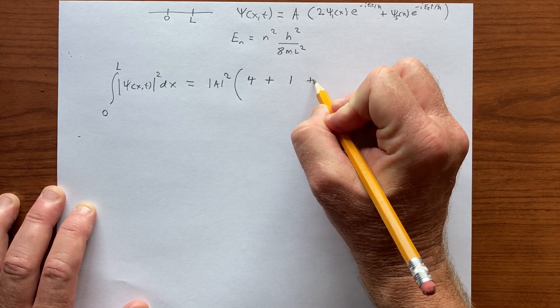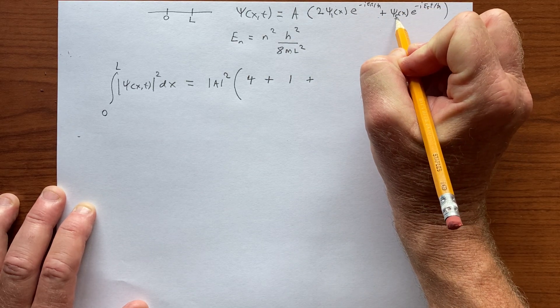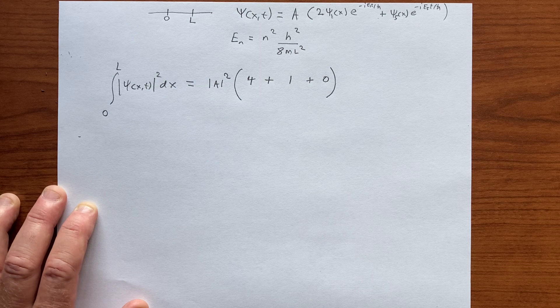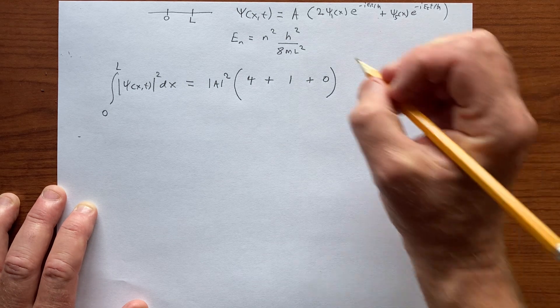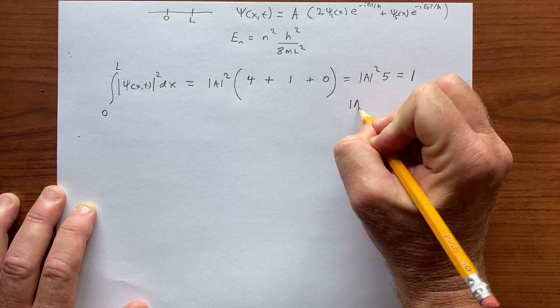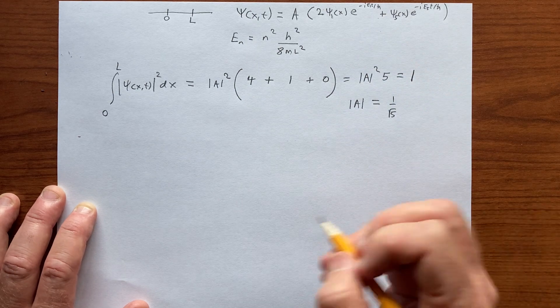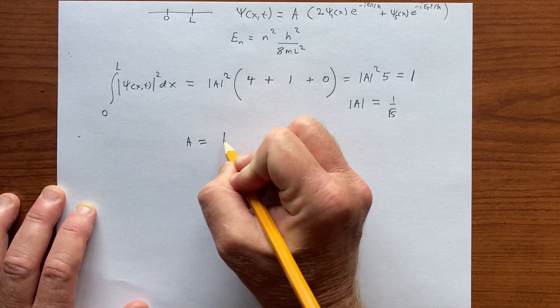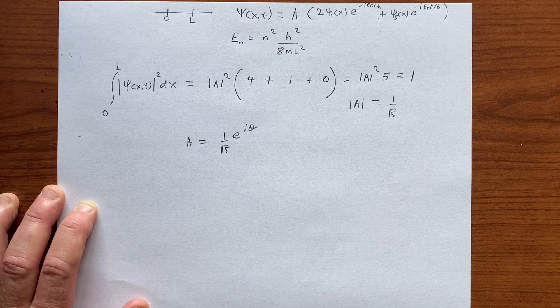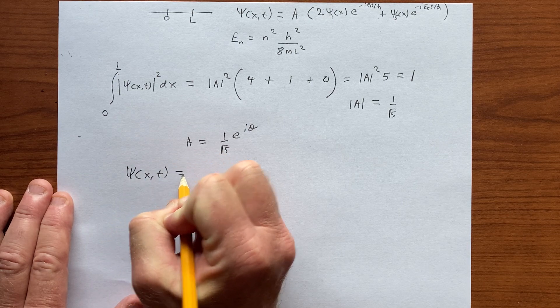Then we have the cross term, the cross terms if you will. And whenever we integrate psi 1 times psi 5 from 0 to L, orthonormality comes in and gives us 0. So our calculation looks like that. And this has to be equal to 1. So this is A modulus squared times 5, and that has to be equal to 1. And so the absolute value of the modulus of A is equal to 1 over root 5. Of course, A could be 1 over root 5 e to the i theta for some value of theta, because it doesn't change any of the physics here.